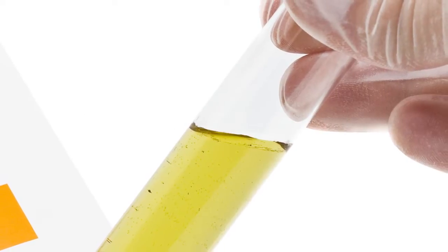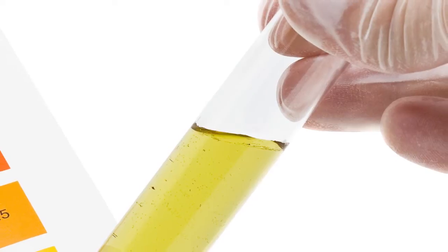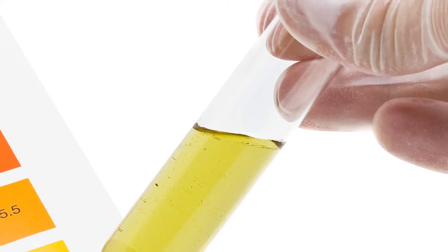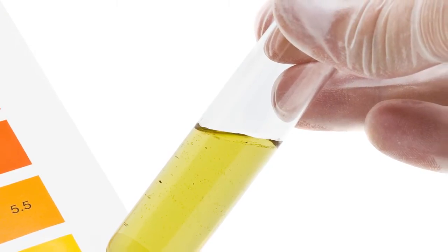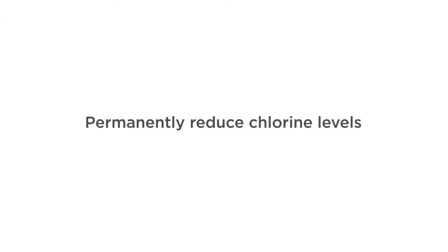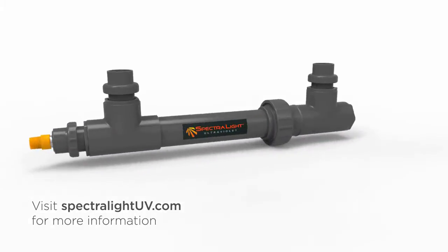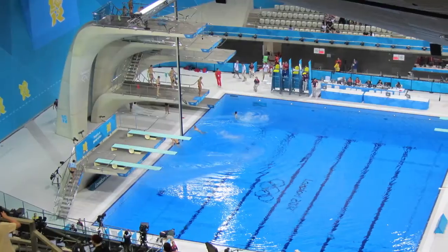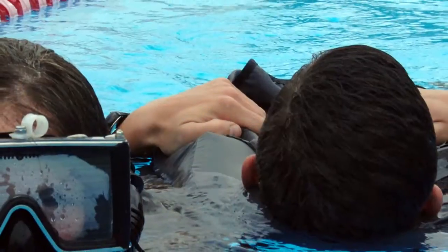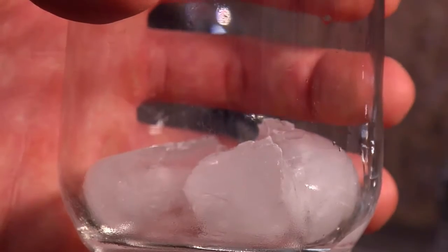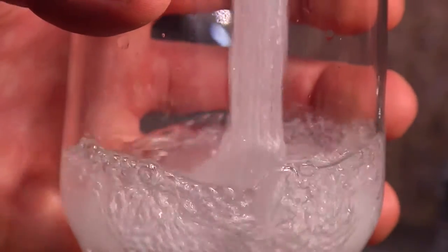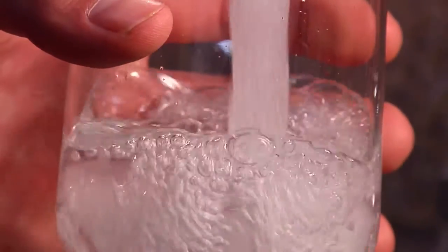An increased chlorine level can result from incorrectly shocking your pool or setting your chlorinator too high. If you'd like to reduce the level of chlorine needed in your pool long term, consider installing an ultraviolet disinfection system. Used by nearly every major aquatic center, UV allows pool owners to reduce chlorine to tap water levels.